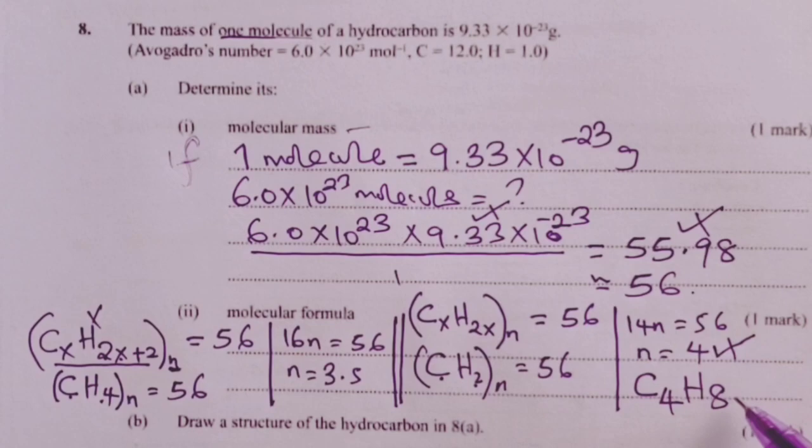We need not proceed to try out alkynes, because up to this point, we've gotten a case where our N is a whole number. The examiner expected the candidate to be a little bit more creative here by trying out the general formulae for the various homologous series of hydrocarbons that we discuss in form 3.